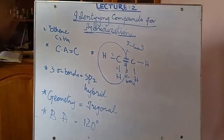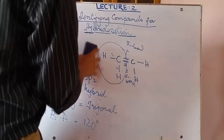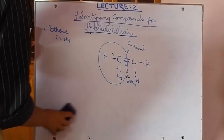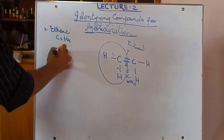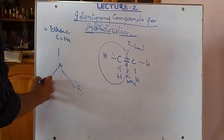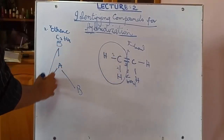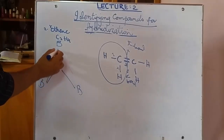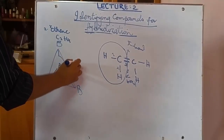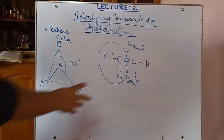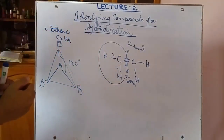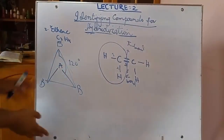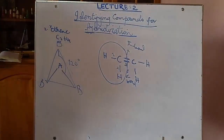The geometry for sp2 hybridization is trigonal planar — sometimes called a plain triangle — with a bond angle of 120 degrees. Now let's draw the structure of ethene. In the sp2 trigonal structure, the central atom has three bonds arranged 120 degrees apart. Since we have two central atoms (two carbons), we will draw two such structures.